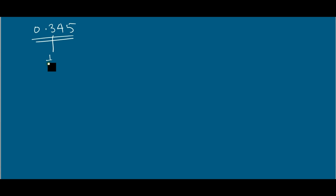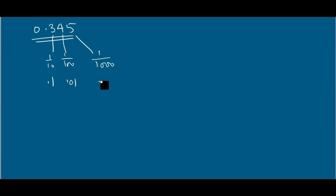I am again reproducing the number 0.345. If you are asked to write the place value of 4: the tenths place means 1 by 10, which is 0.1 in decimal. The hundredths place means 1 by 100, which is 0.01. The thousandths place means 1 by 1000, which is 0.001. So the place value of 4 is 4 into 1 by 100.